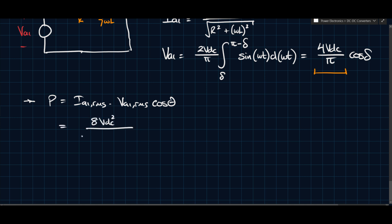And so we can say that this is equal to 8VDC squared divided by pi squared times omega L squared plus R squared. And this is cos squared delta cos theta. And this is the power that is delivered to the load, the resistive part, because that's where the average power would go.